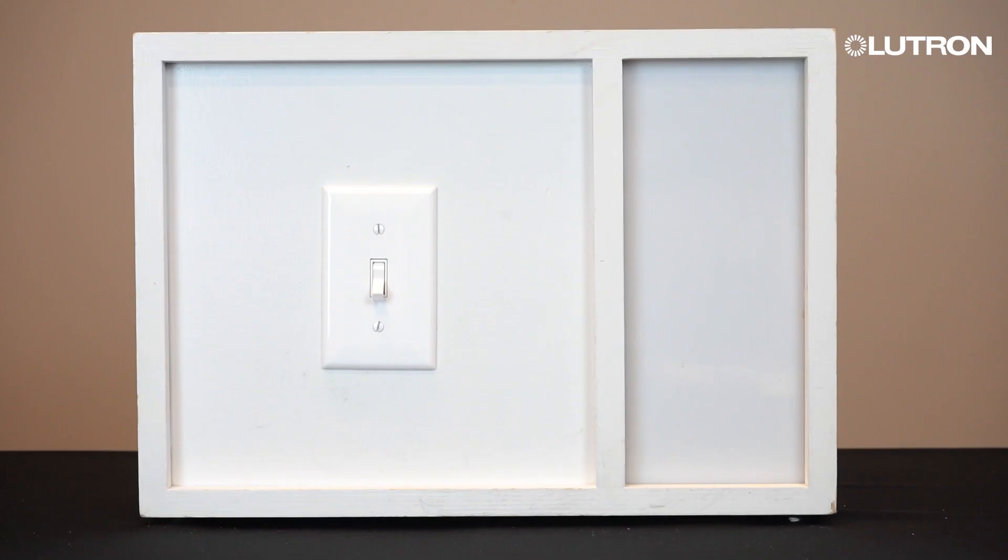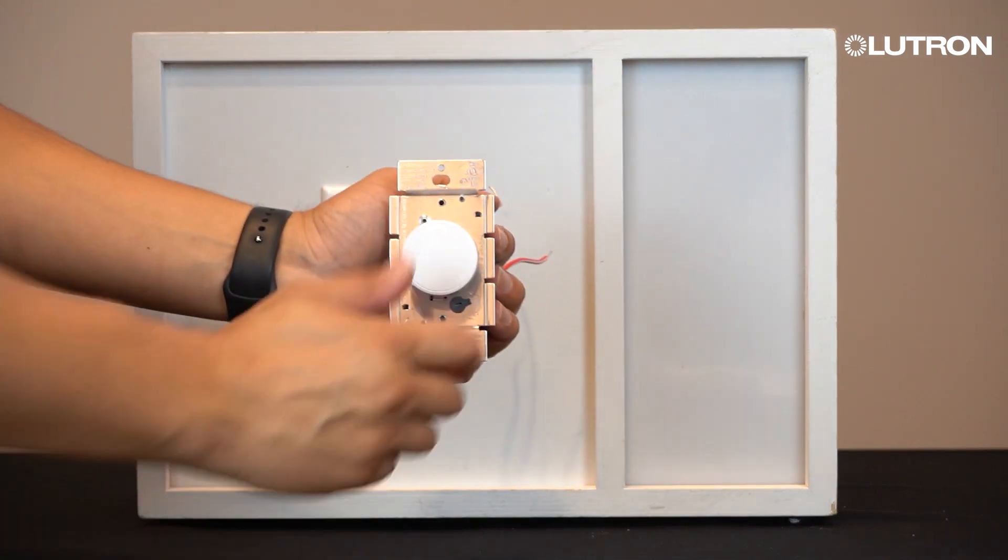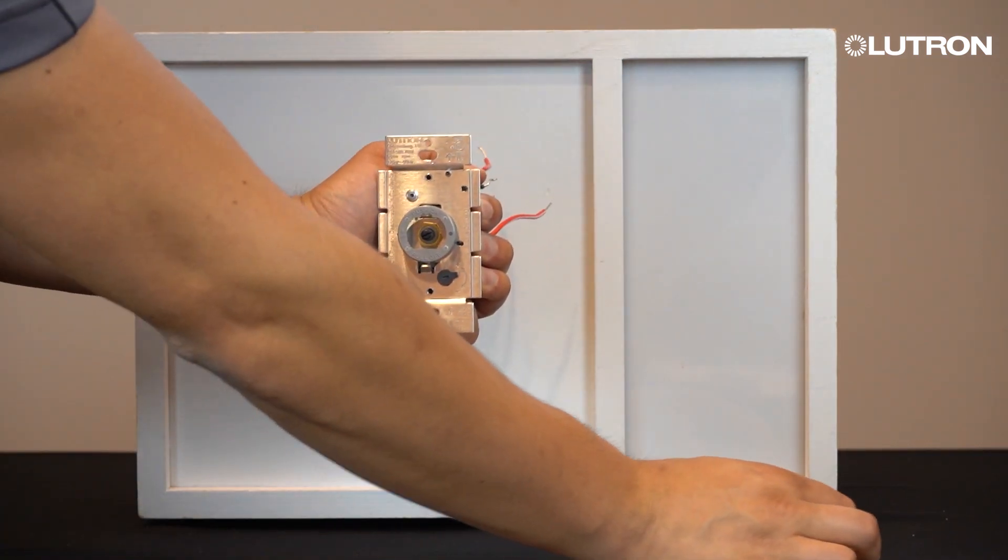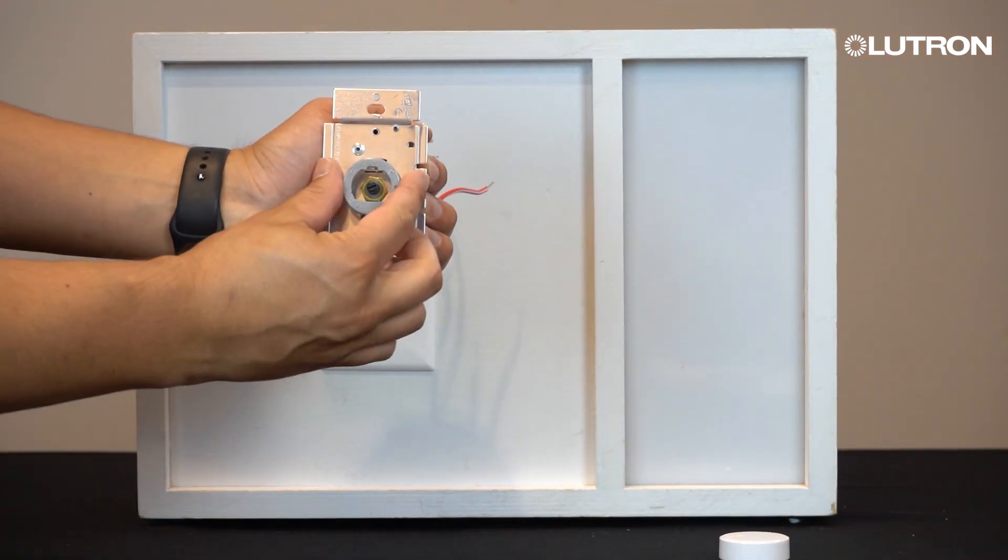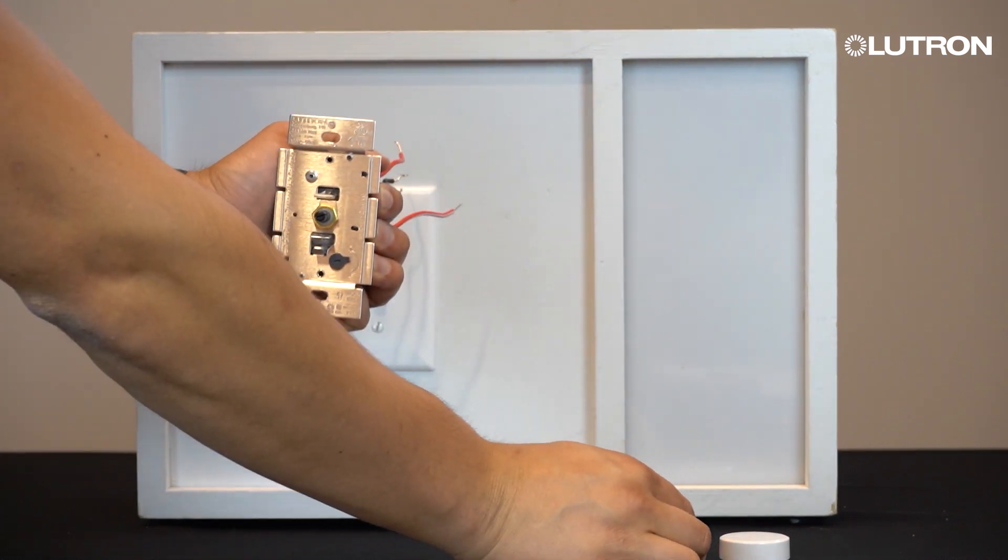To get started, remove the knob and light ring from the Dahlia dimmer. First, pull hard on the knob to expose the light ring, then remove the ring by pinching both sides and pulling away from the device.